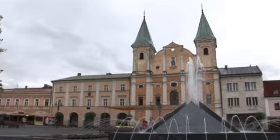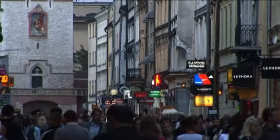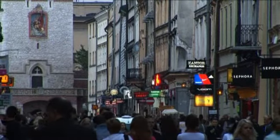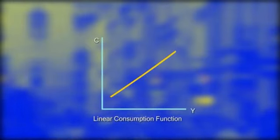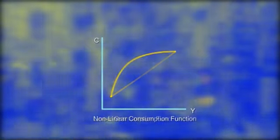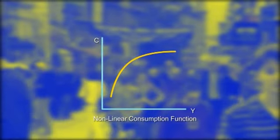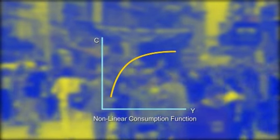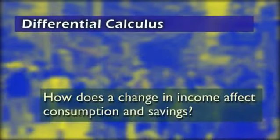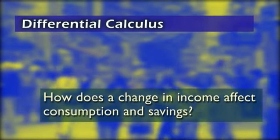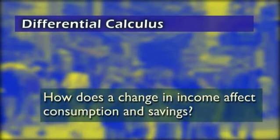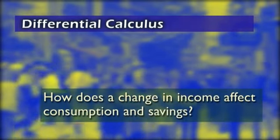But the problem, as we saw in film 2, is that sometimes a linear relationship between income and consumption doesn't accurately reflect reality. We can sometimes improve the fit if we have a consumption function that's non-linear. But how do we estimate the effect on consumption, and on saving, of a change in income now? Well, it's really not that difficult. We use differential calculus.